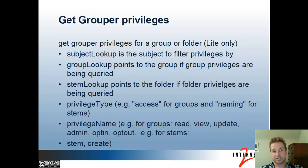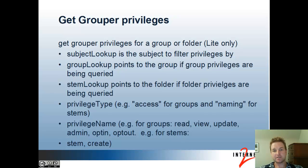The second operation is Get Grouper Privileges. Grouper Privileges are things on groups, folders, or attribute definitions that control who can see them, who can assign memberships for groups, who can create objects in a folder, or who can assign an attribute — admin, opt-in, opt-out, etc. This operation only has a light version at the moment. You pass in a subject lookup to filter the subject that has the privileges, a group lookup or stem lookup, the privilege type (access or naming), and the privilege name: read, view, update, admin, opt-in, opt-out, or for stems, stem or create.